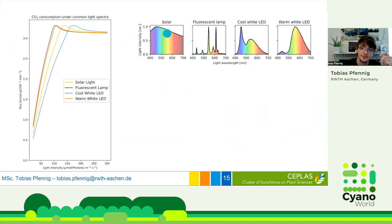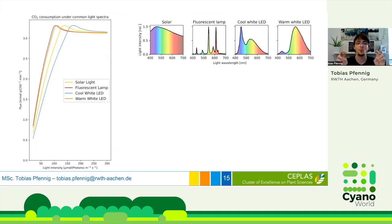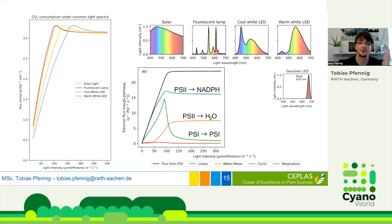This is the first thing we looked at: CO2 fixation and the electron fluxes. At the top right, you can see different light spectra commonly found in biotechnological applications — solar light, fluorescent lamps, different LEDs. On the left, you can see simulation results where we used these different light sources at different intensities and simulated CO2 consumption as a measure of photosynthetic activity. There are major differences between these light spectra at the same light intensity. Looking into cellular processes, at low light electrons mostly go the linear path to NADPH, but at higher intensities linear electron flow stagnates and the water-water cycle takes over — known from literature as an overflow valve at high light.